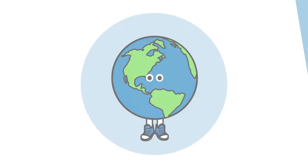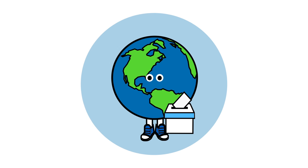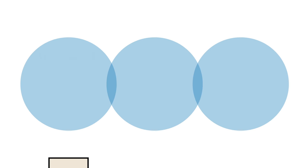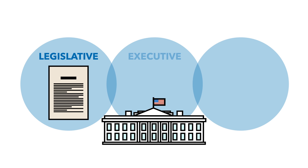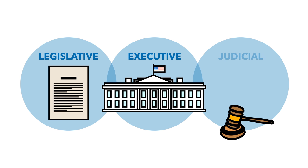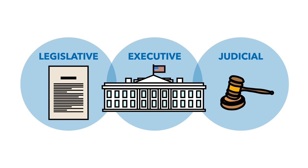First off, let's establish that most democracies around the world have three basic and distinct branches of government: legislative, executive, and judicial, though the way they manifest themselves can vary depending on country.